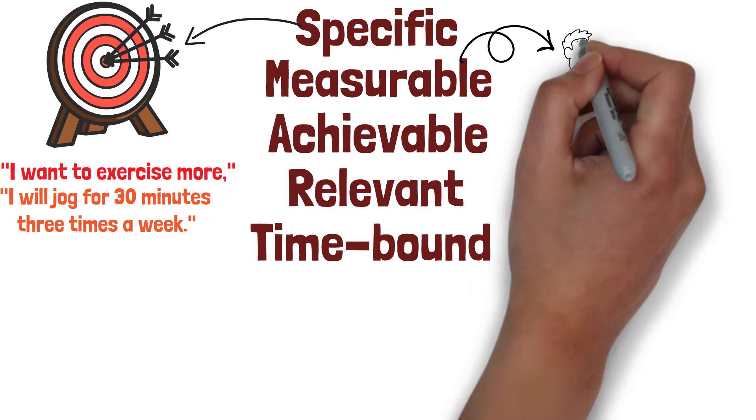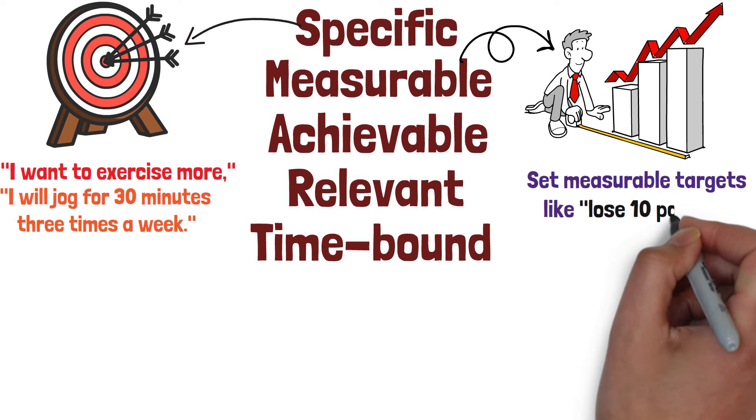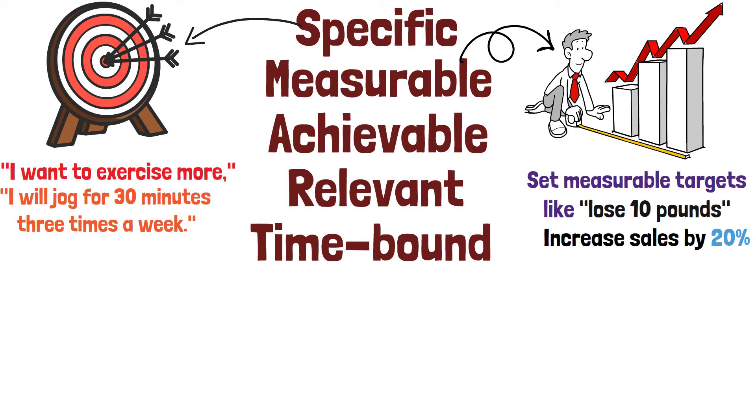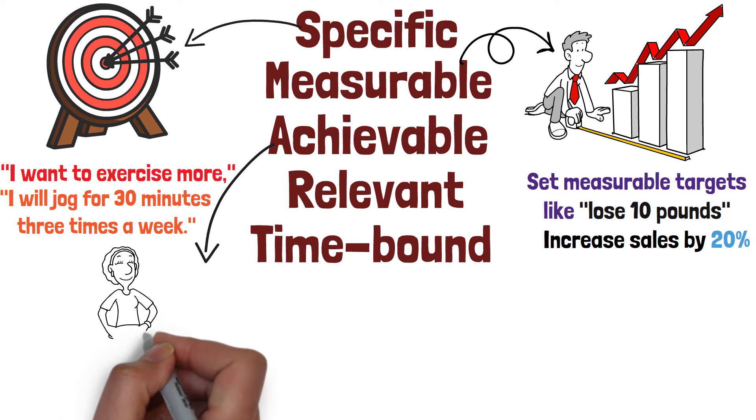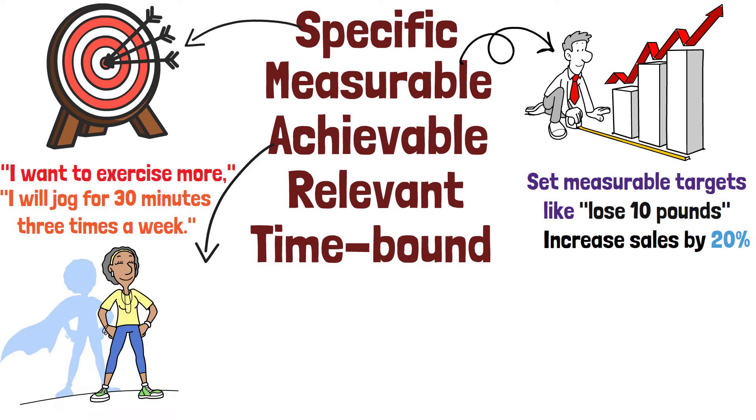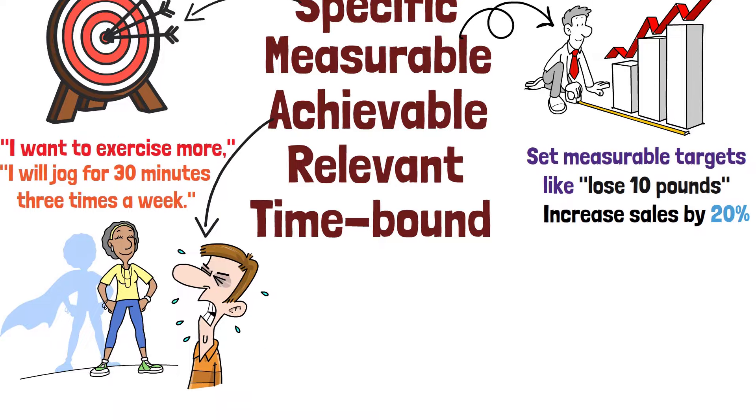Measurable, establish concrete metrics to track your progress. How will you know when you achieved your goal? Set measurable targets like lose 10 pounds or increase sales by 20%. Achievable, ensure that your goals are realistic and within your capabilities. While it's great to aim high, setting unattainable goals can lead to frustration and demotivation.